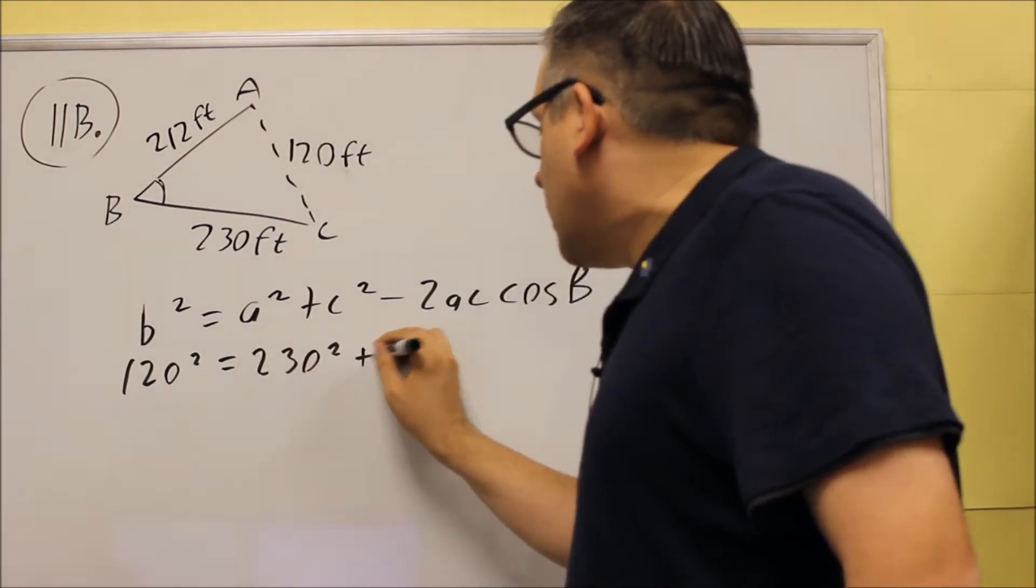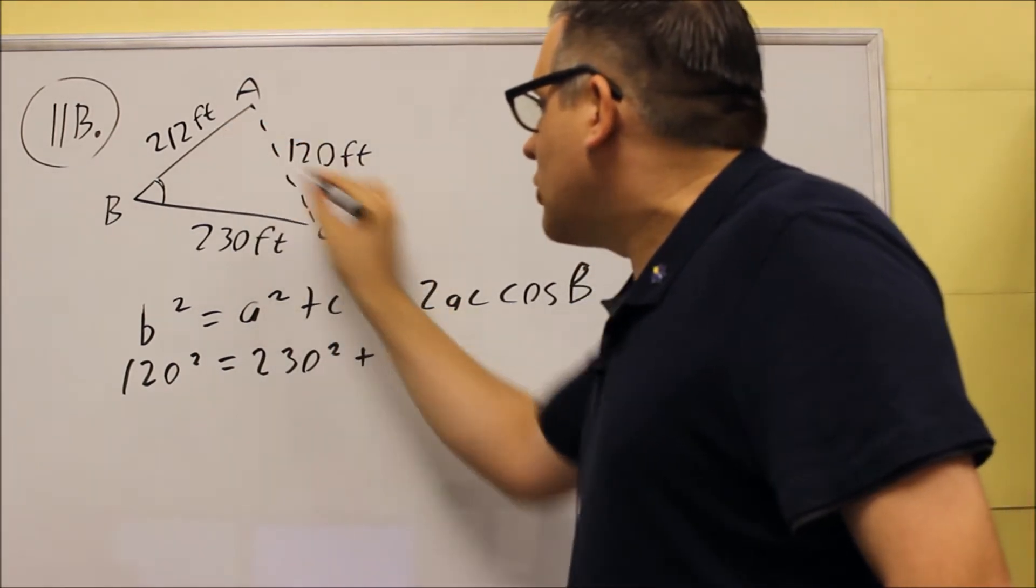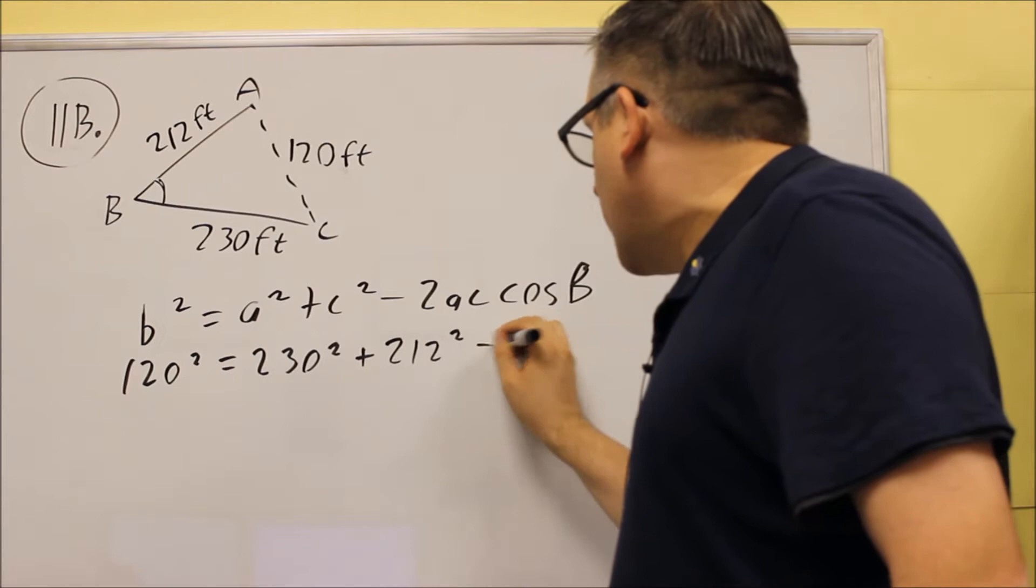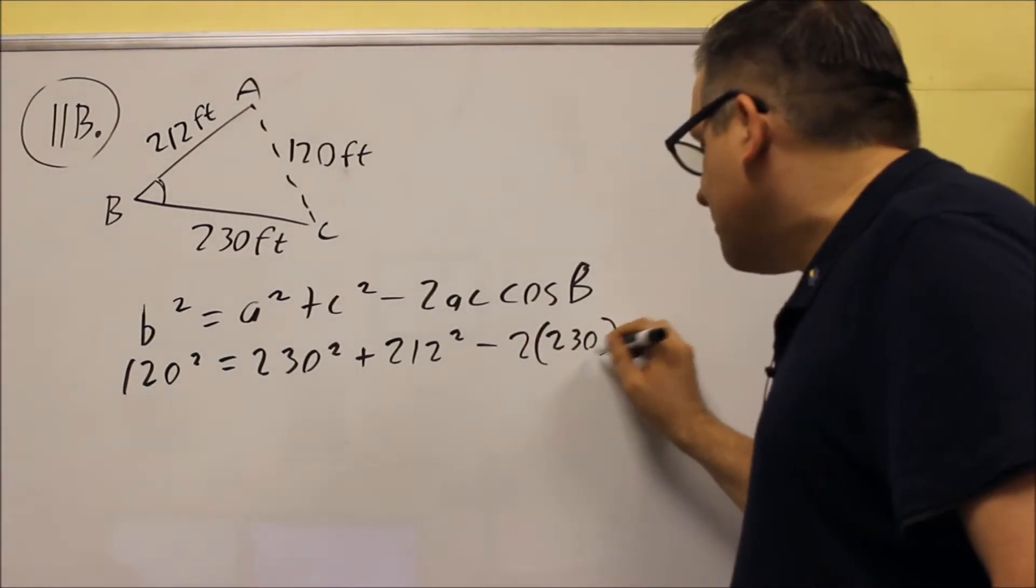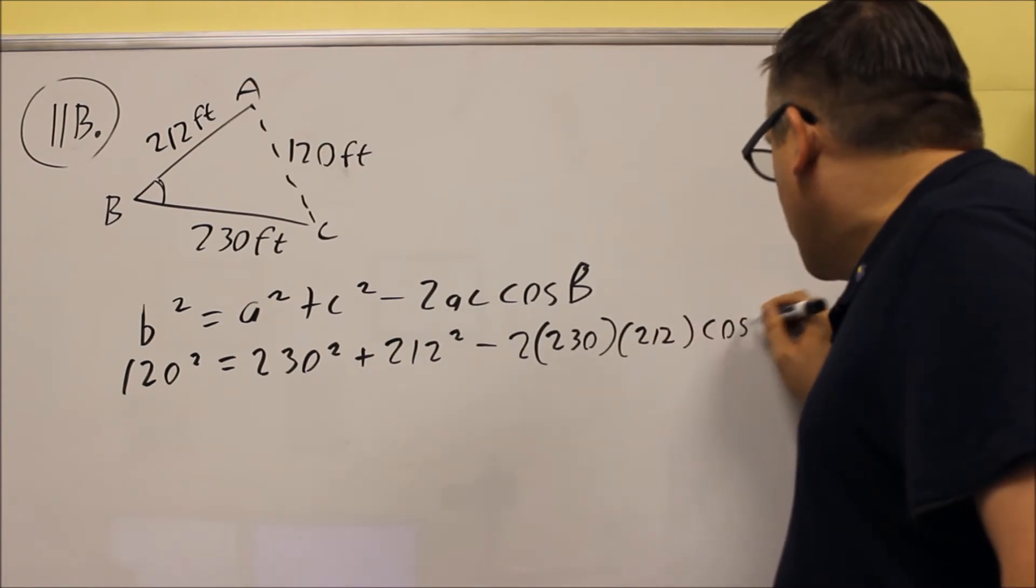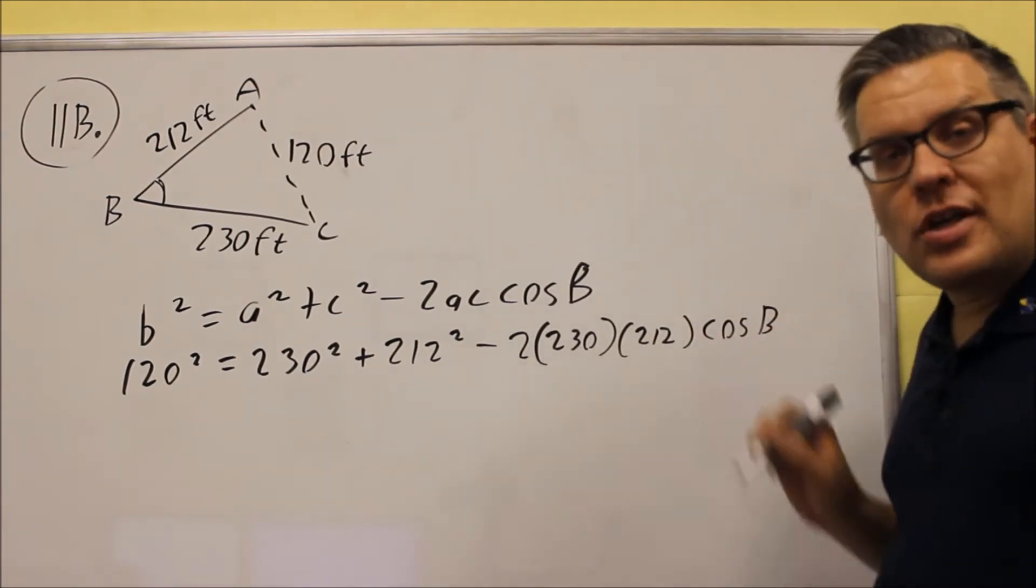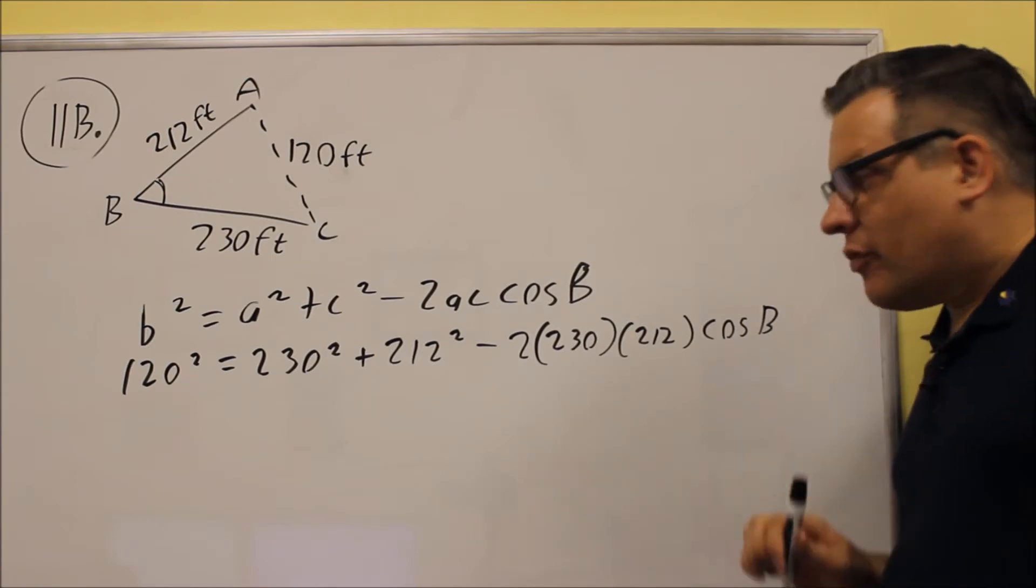and C is going to be 212 squared, and I'll have minus 2 times 230, and then 212. We don't know what angle B is this time, so we'll leave that one alone.